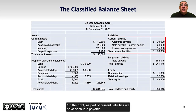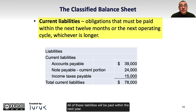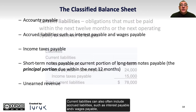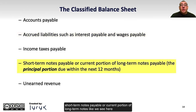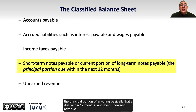On the right, as part of current liabilities, we have accounts payable, and the current portion of notes payable and income taxes payable. All of these liabilities will be paid within the next year. Current liabilities can also often include accrued liabilities such as interest payable and wages payable, short-term notes payable or current portion of long-term notes, the principal portion of anything basically that's due within 12 months, and even unearned revenue.